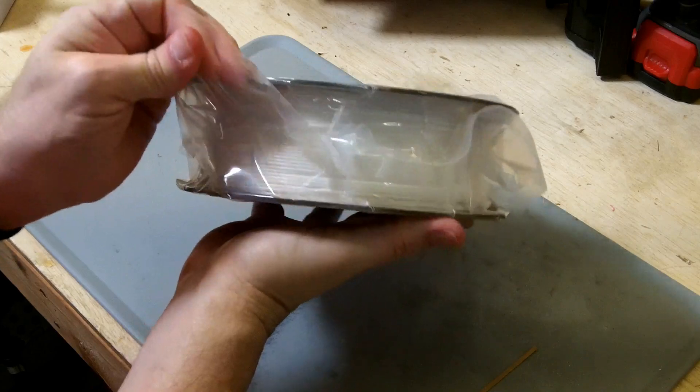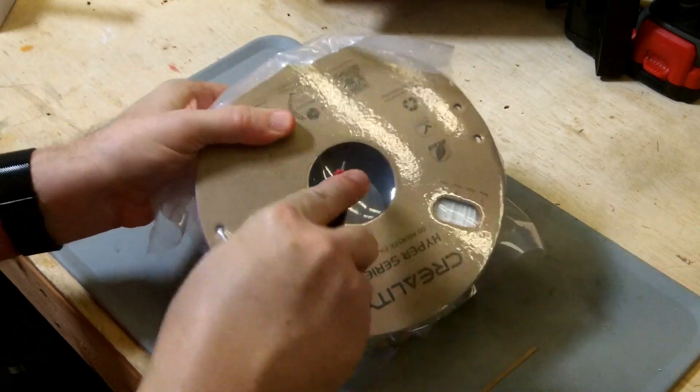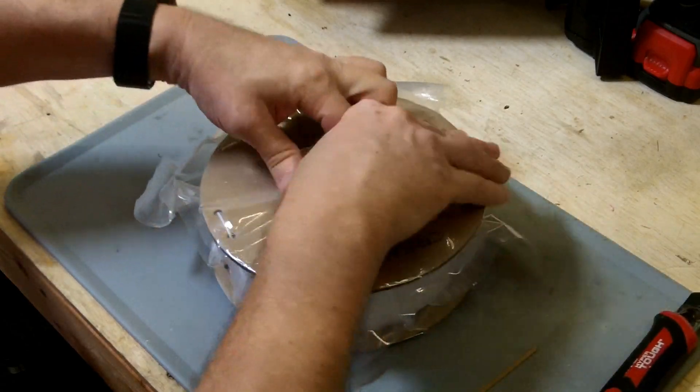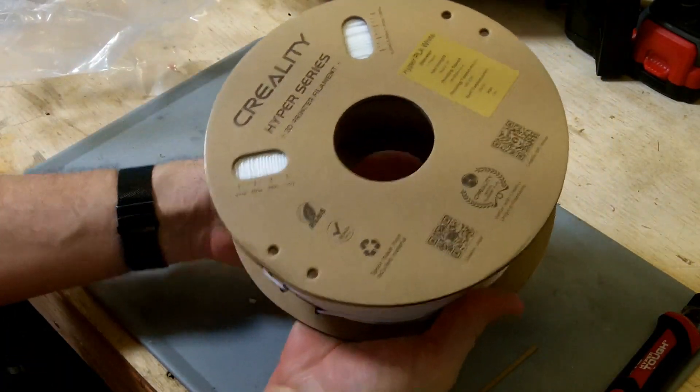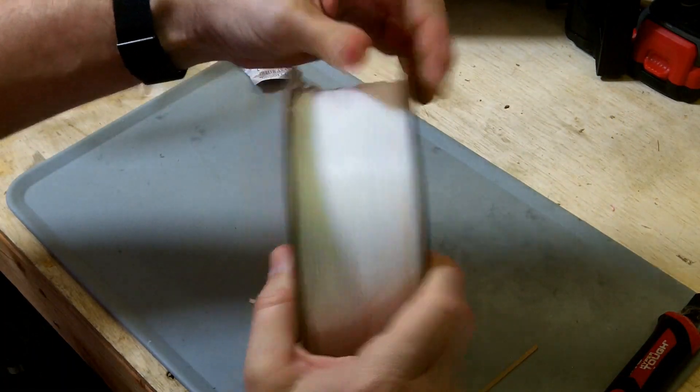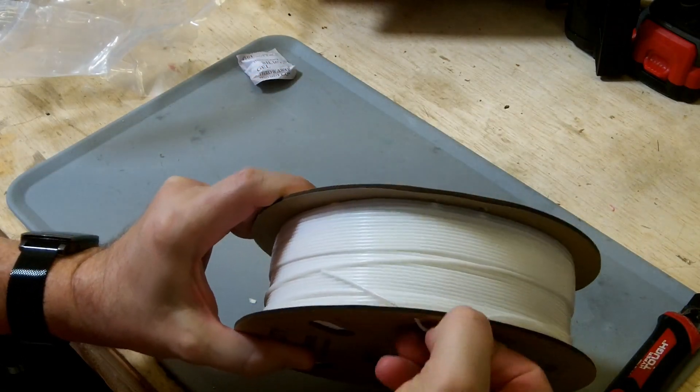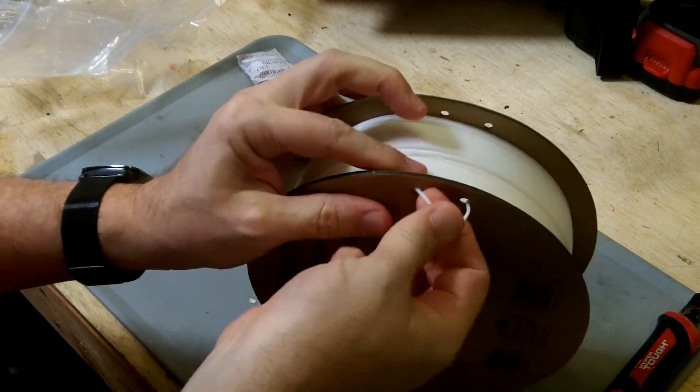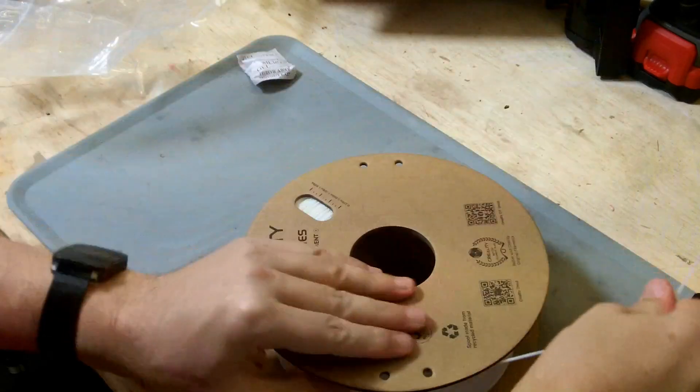It comes packaged in a little vacuum bag, and there is a silica gel bag on the inside. It has a couple of little holes on the side for fixing the filament so it doesn't roll around on you too much.